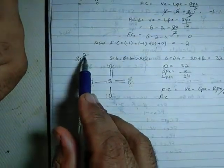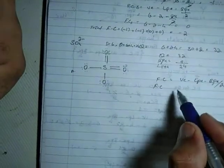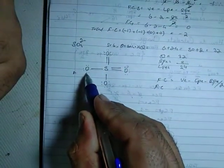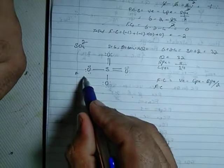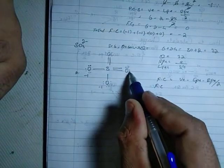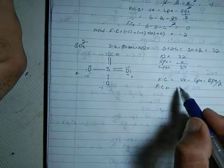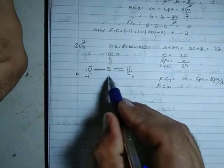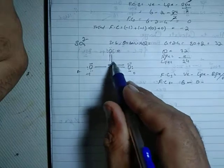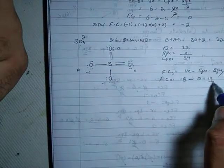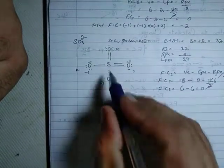Calculating the formal charge for sulfur with one double bond: 6 minus 0 lone pairs minus 8 bond pair electrons divided by 2 gives 6 minus 4 equals 0. The FC of sulfur is zero.